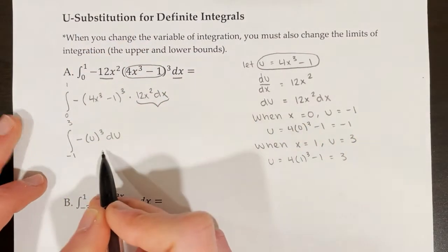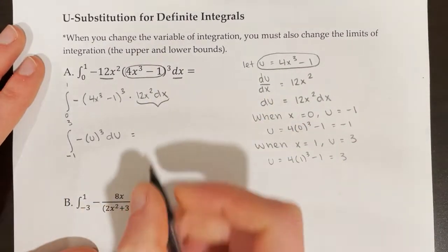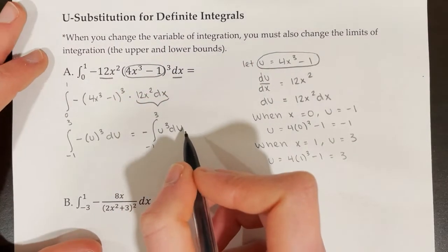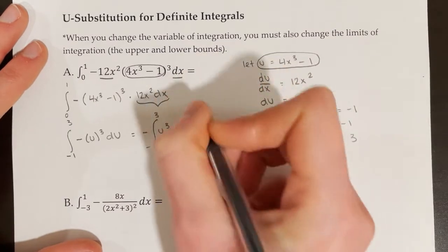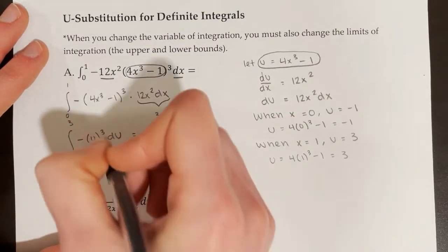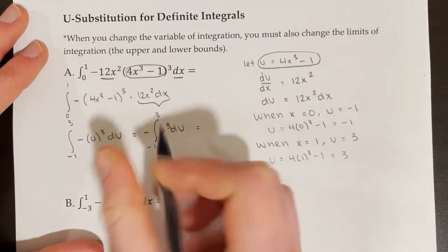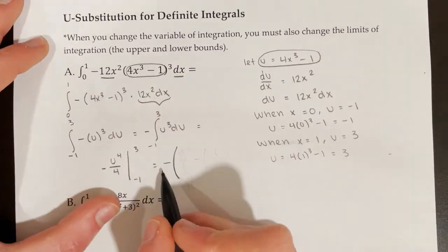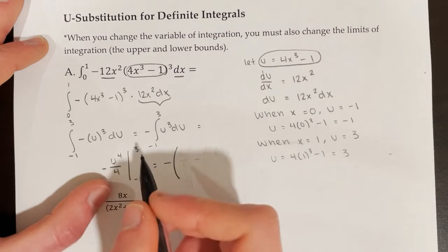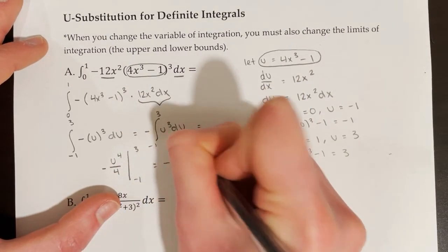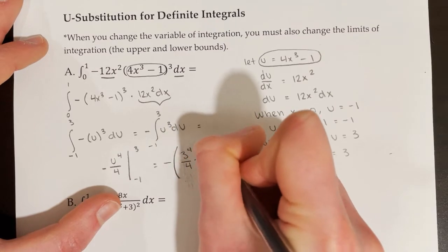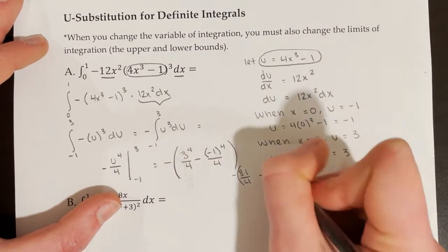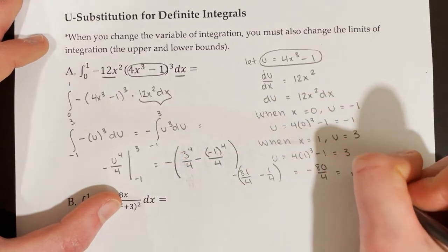Now this becomes a problem to solve using the fundamental theorem of calculus. I'm going to pull the negative outside to make it easier. The antiderivative is u to the fourth over 4, with that negative sign out front, evaluated at negative 1 and 3. So we have that big negative out front, then 3 to the fourth over 4 minus negative 1 to the fourth over 4. That simplifies to negative 80 fourths, or negative 20.